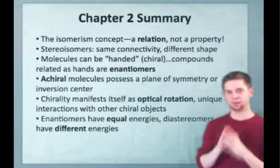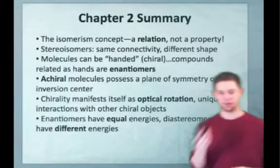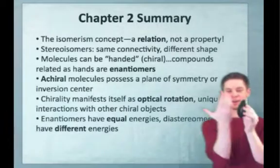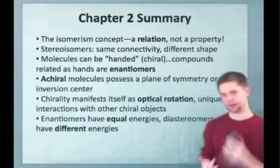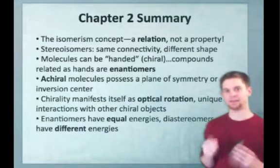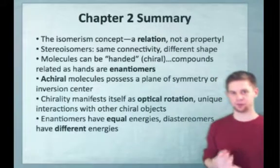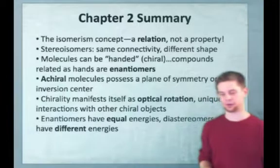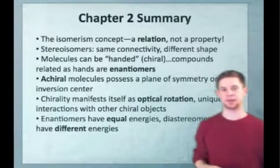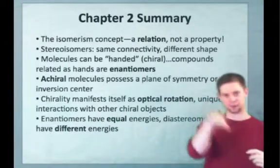Achiral molecules, on the other hand, if you reflect them through a mirror, you simply get the same molecule out. For instance, the mouse I'm holding right now is an example of an achiral object — it's got a plane of symmetry. We identified planes of symmetry and inversion centers as the primary elements of symmetry that allow us to identify a molecule as achiral. Chirality manifests itself physically as optical rotation — chiral non-racemic molecules have the ability to rotate plane-polarized light by affecting those chiral helices in different ways.